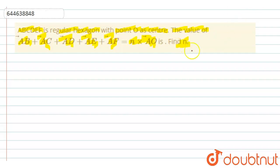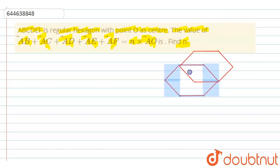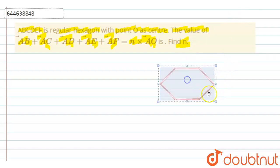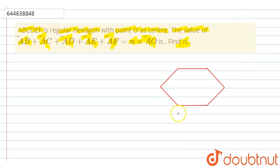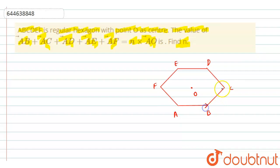Let me draw the figure first. This is a regular hexagon. Let me label the points: A, B, C, D, E, and F, and this is the center of the hexagon, O. These sides are given in the form of vectors. So we have AB vector, BC vector, CD vector, DE vector, EF vector, and FA vector.